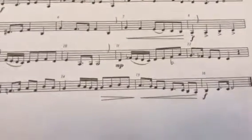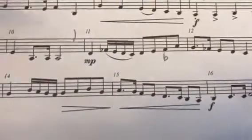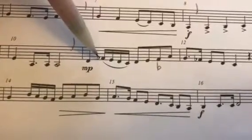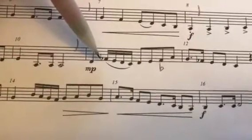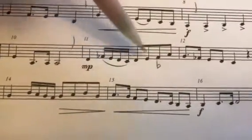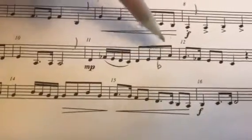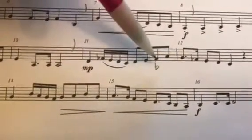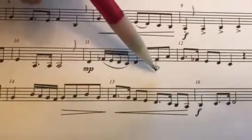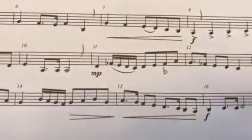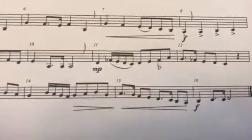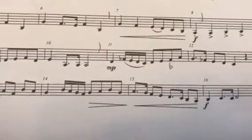I also want to point out a danger spot with the accidentals. Look at measure 11 — there's a rule: when we have a flat here on this A flat, that means all of the A's after it are also flat; that flat carries to them until we have a bar line. So I went ahead and drew a little flat underneath it as a friendly reminder, and I'd advise you to mark that A flat too.